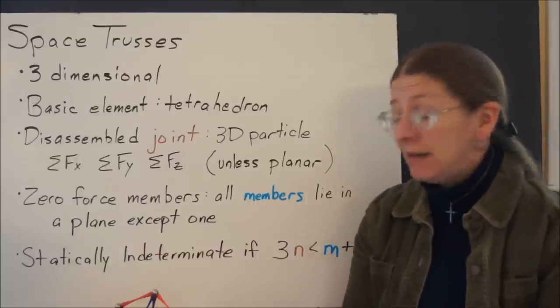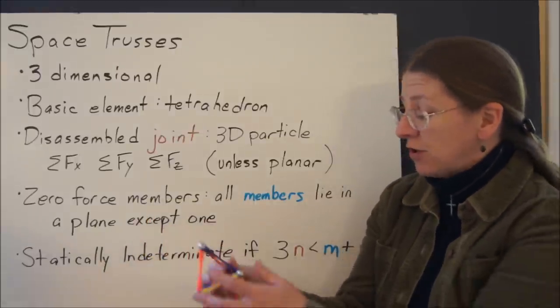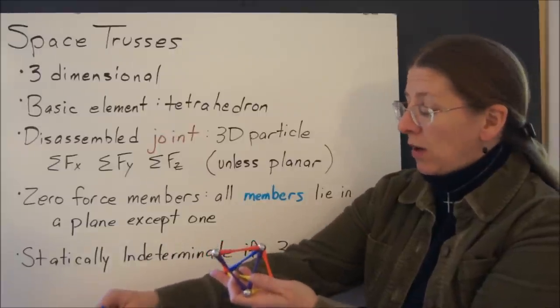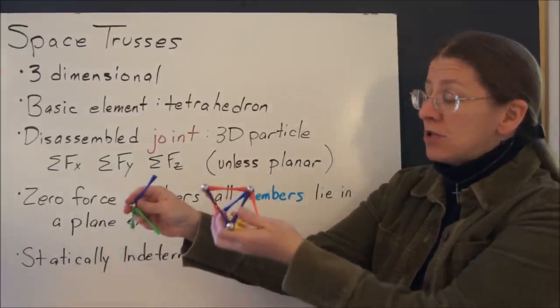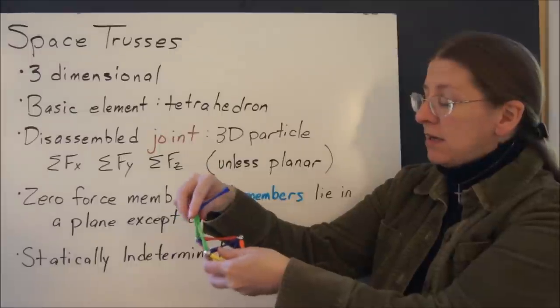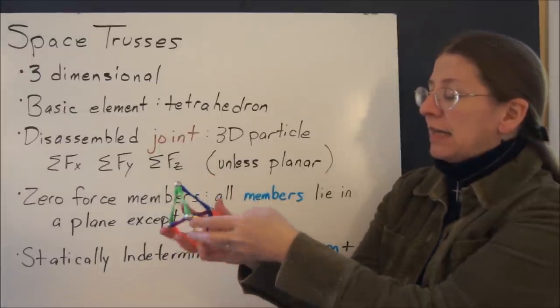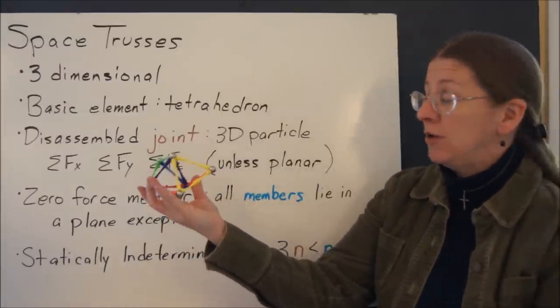Beyond that, there isn't anything different from a 2D structure to a 3D structure. And when it comes to building three-dimensional space trusses, I recommend tetrahedrons and continuing to build out from your basic element.